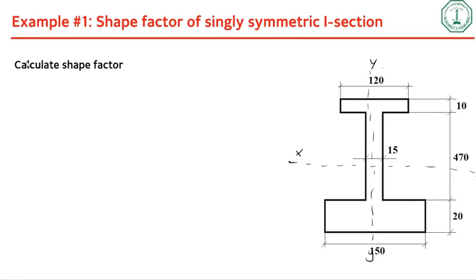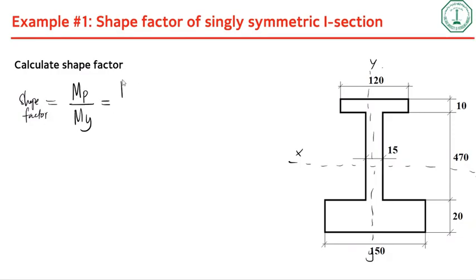The shape factor is calculated as Mp divided by My. Mp is equal to Fy times Zx, and My is equal to Fy times Sx.